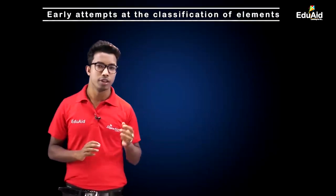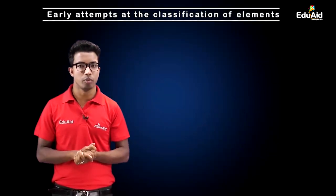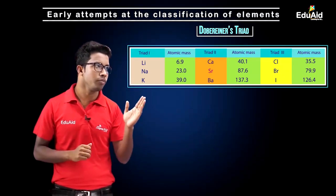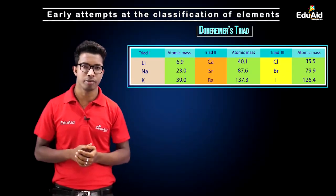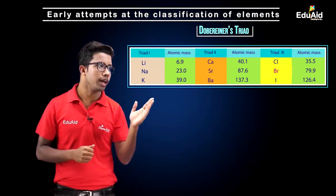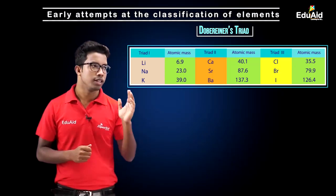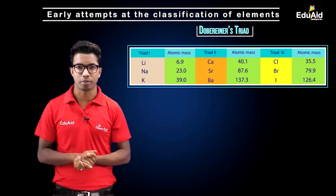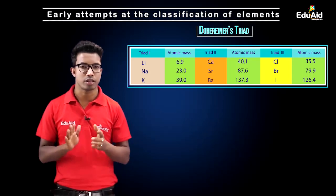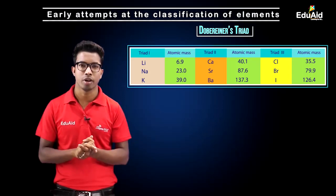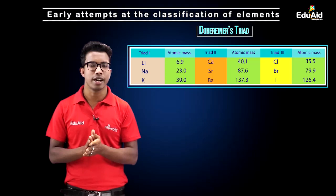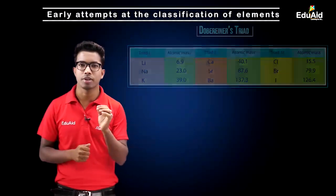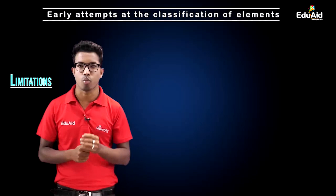Similar to the lithium-sodium-potassium triad, the other two groups that Döbereiner was able to find are calcium-strontium-barium and chlorine-bromine-iodine. These are the three different groups that Döbereiner identified.